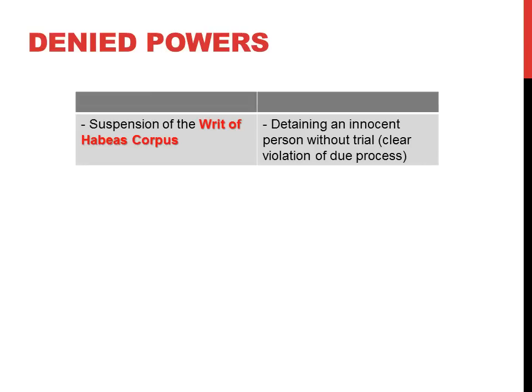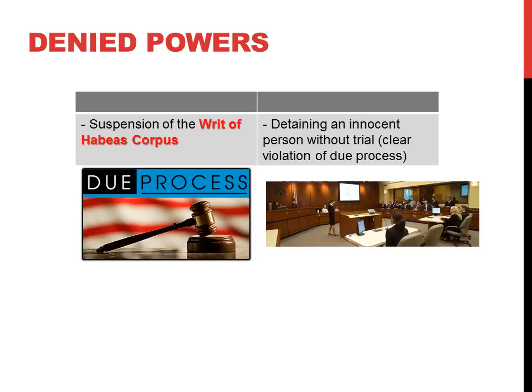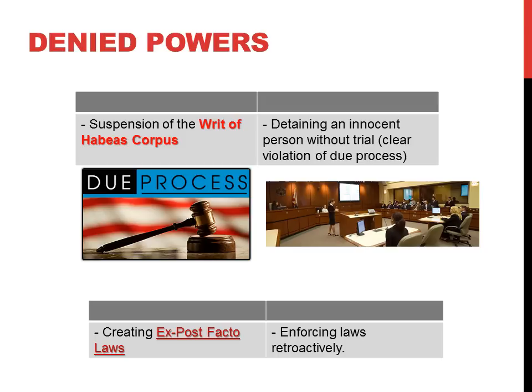There are also some powers expressly denied to the United States Congress through the Constitution. The first is the ability to suspend the writ of habeas corpus, which would be a clear violation of due process rights — allowing the government to detain an innocent person simply based on accusations without a trial. The other is the passage of ex post facto laws — passing a law and then enforcing it retroactively by punishing someone who committed an act when that act was not actually considered illegal at the time.